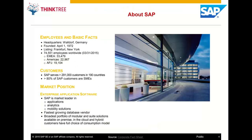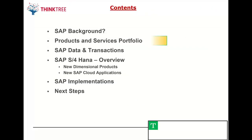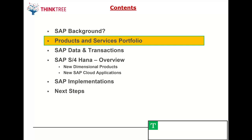SAP was established in 1972, making it a very old company. From 1972 to 2020, that's almost 48 years — a very long time from an IT perspective. According to one Gartner estimate, 87 percent of Fortune 500 companies in the world use SAP. That is a very prominent presence in the market — 87 percent of Fortune 2000 companies is a significant number.